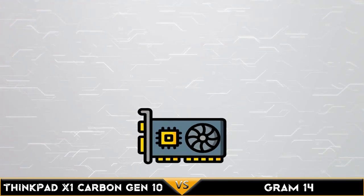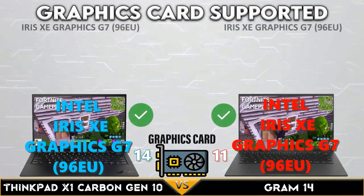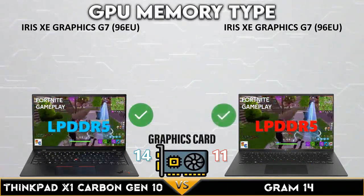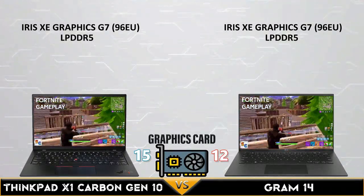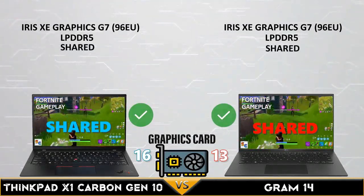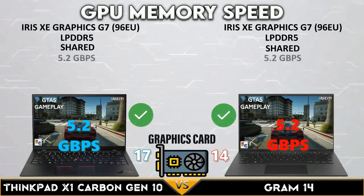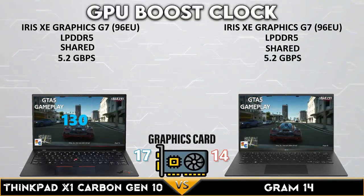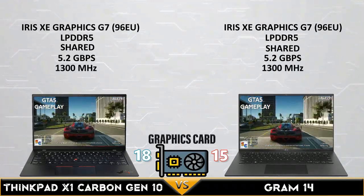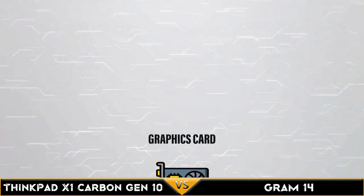Now let's get into the GPU comparison. Both have the same integrated GPU, and both devices have LPDDR5 GPU memory with shared GPU memory. Same memory speed and the same 1300 MHz GPU boost clock. The ThinkPad Carbon has up to 20W GPU TGP.